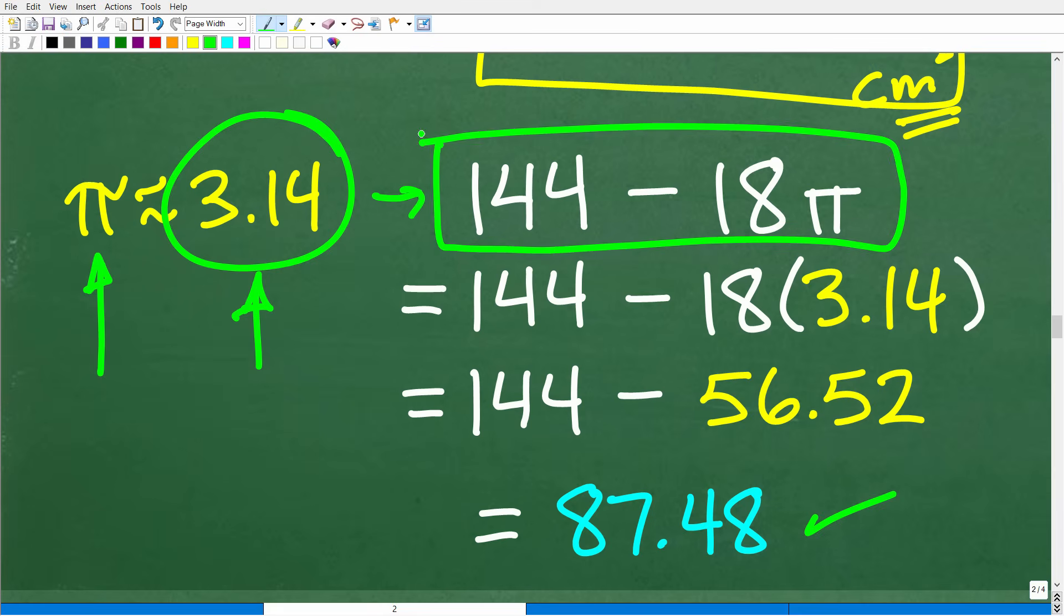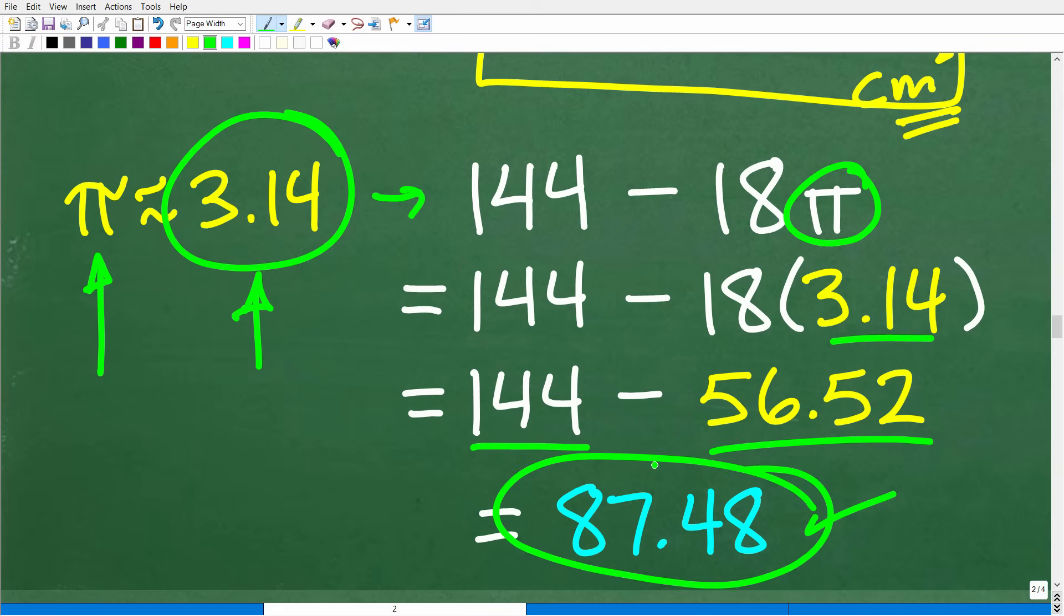So this is the exact answer: 144 minus 18 pi units squared. But let's go ahead and get an approximation for this. So we're going to replace this pi with 3.14. So 18 pi means 18 times pi. So we'll plug in 3.14, and then we'll just do the lovely math here. So 18 times 3.14 gives us 56.52. So we'll subtract that away from 144, and we end up with 87.48 units squared. So again, a very typical type of problem in geometry.